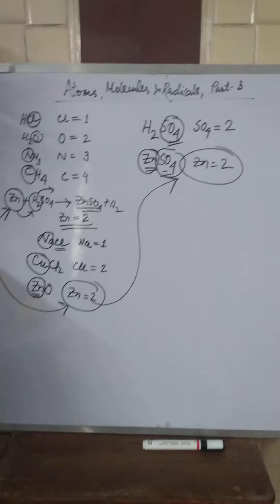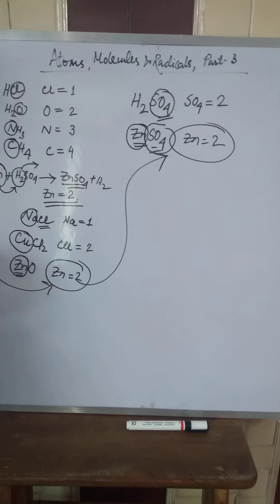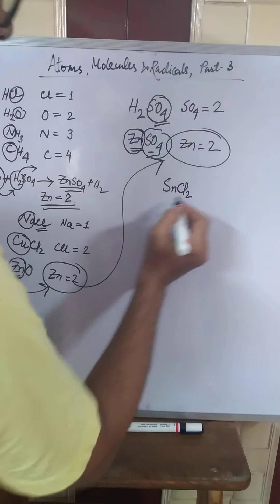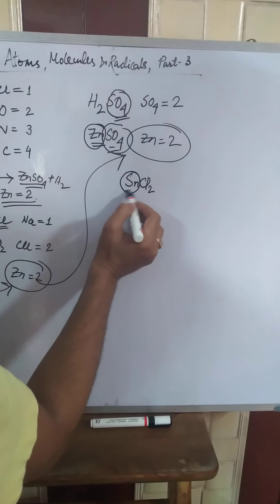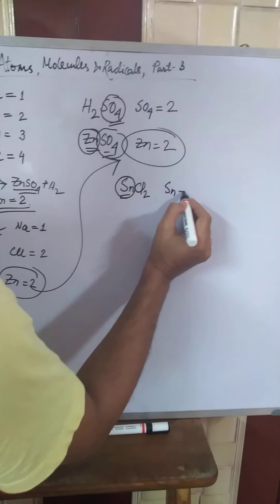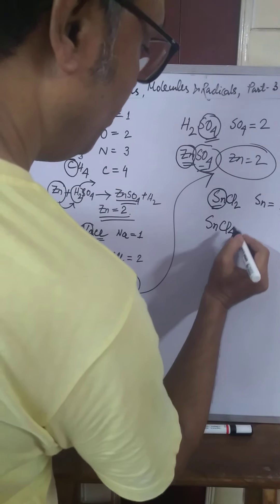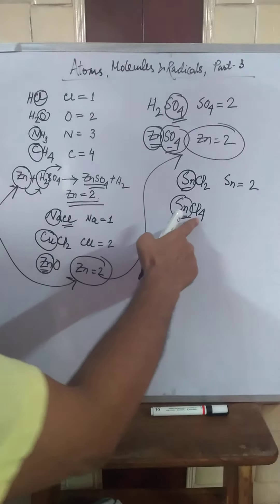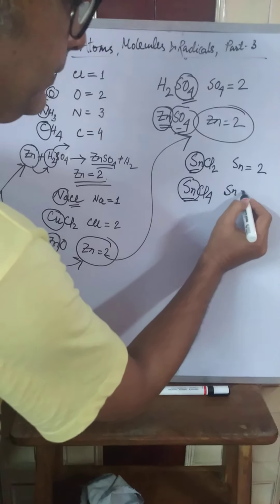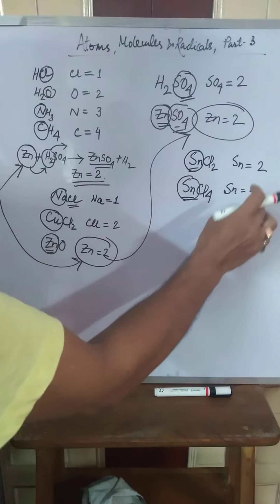This is the way to find out the valency of an element. Now, in some cases, you will find that an element exhibits more than one valency — that is called variable valency. For example, SnCl2, stannous chloride. One atom of tin is associated with two chlorine atoms, and the valency of one chlorine atom is one. So the valency of tin here is two. Now take the example SnCl4. Here also, one tin atom is attached with four chlorine atoms, and the valency of one chlorine is one. So here the valency of tin is four. You see that tin may have a valency of either two or four.